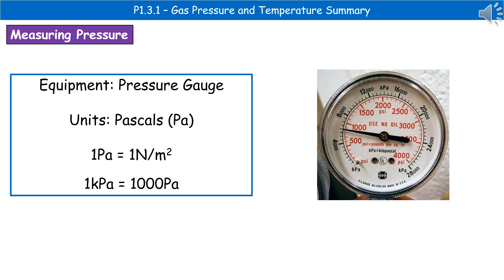When it comes to how we measure pressure, we use a piece of equipment called a pressure gauge. The units for pressure are pascals, given the symbol Pa, capital P, lowercase a. One pascal is equal to one newton per meter squared.